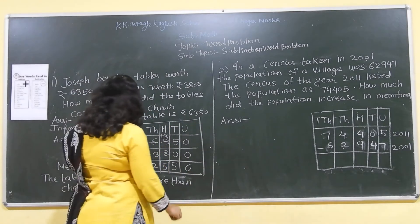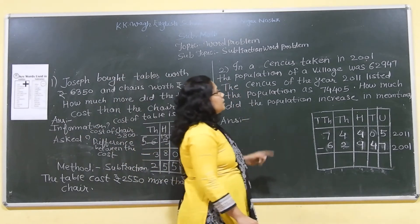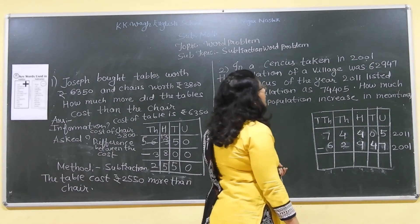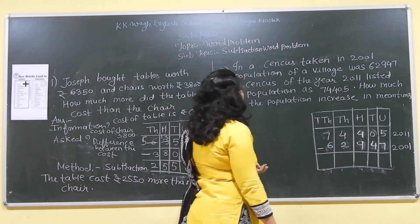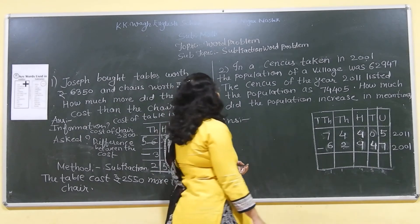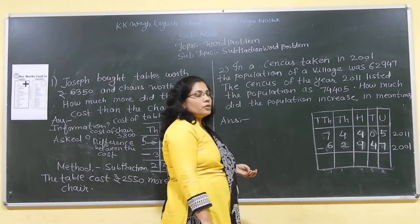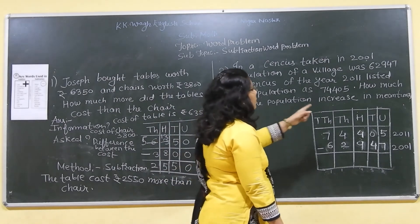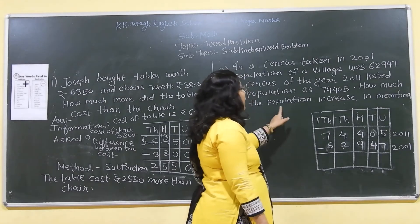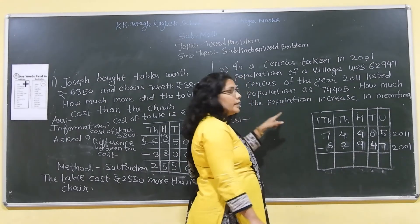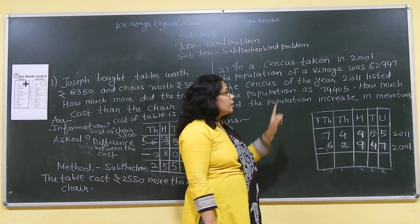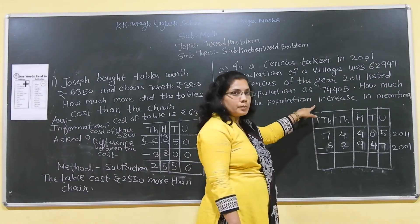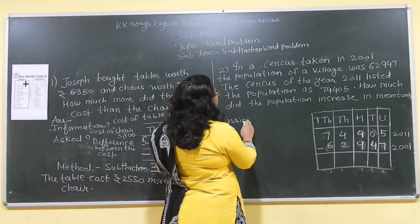Now, we will go to the second sum. In a census taken in 2001, the population of the village was 62947 and the census of the year 2011 said the population has 74405. How much did the population increase in mean time? This is the keyword, that is increase, how much increase means we have to subtract. So, what information is given here?